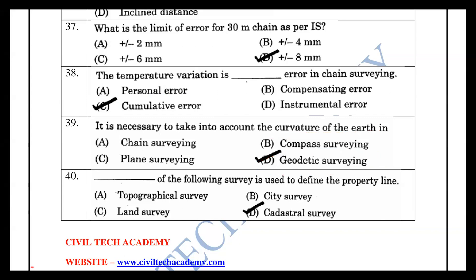The survey used to define boundary lines or property lines is cadastral survey. Topographical survey measures natural features.